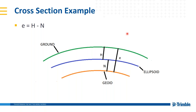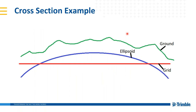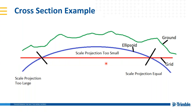I throw the geoid in there because when we get into the settings in Access and TBC, we're actually going to select the geoid model to load into both softwares. The software uses it in calculations for the elevation scale factor and similar things. So back to the three surfaces: ground surface, ellipsoid as the mathematical model of the earth, and the state plane grid.